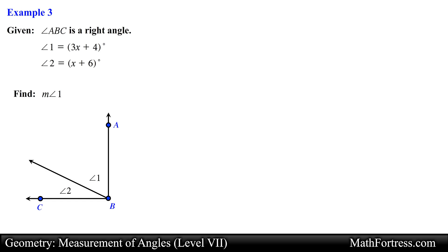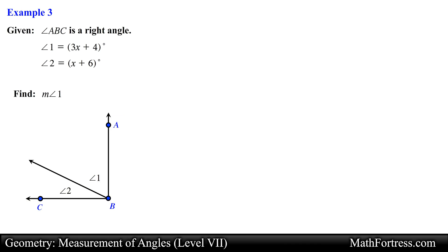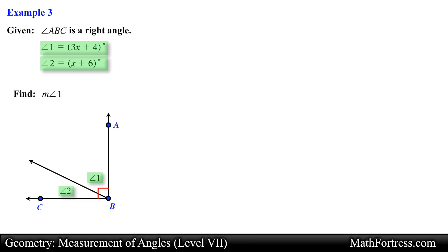Let's try the next problem. Given angle ABC is a right angle, angle 1 is equal to 3x plus 4 degrees, and angle 2 is x plus 6 degrees — find the measurement of angle 1. We are given that angle ABC is a right angle, meaning the measurement of angle ABC is 90 degrees. We are also given algebraic expressions for angle 1 and angle 2, and we will use the geometric relations along with algebra to determine the measurement of angle 1.